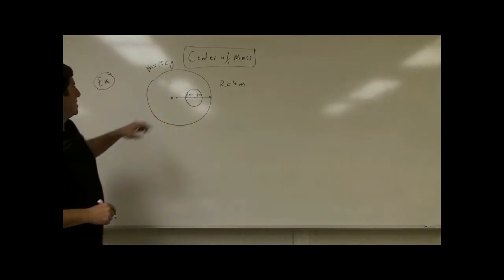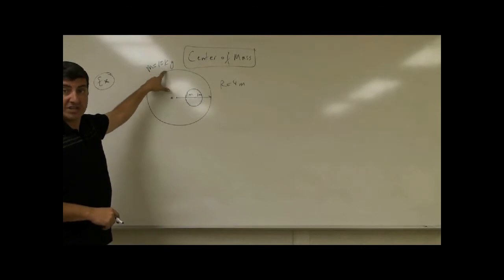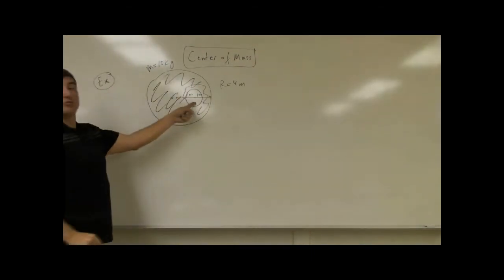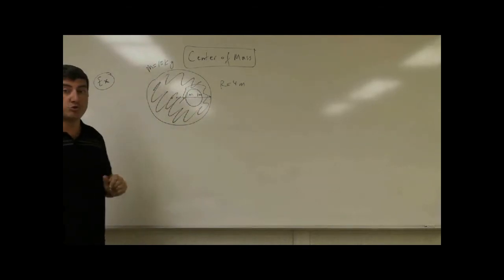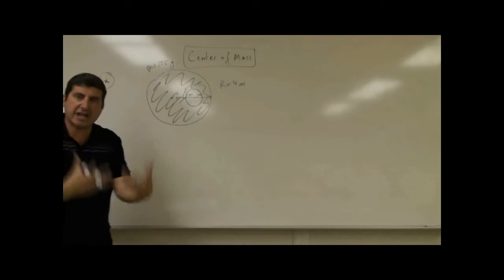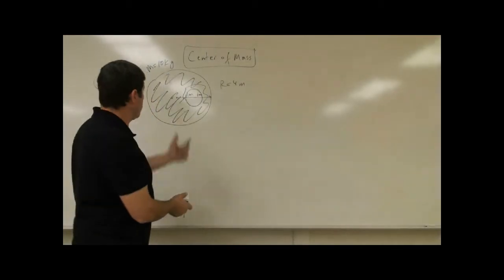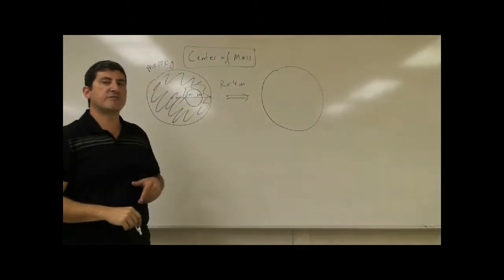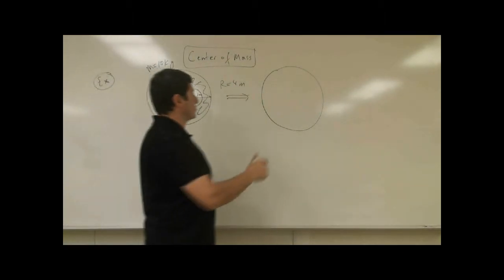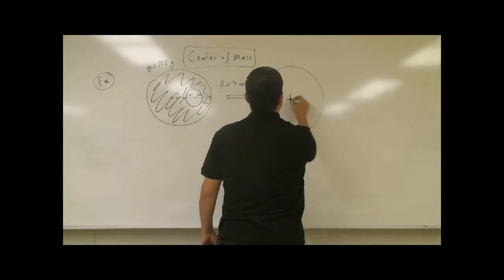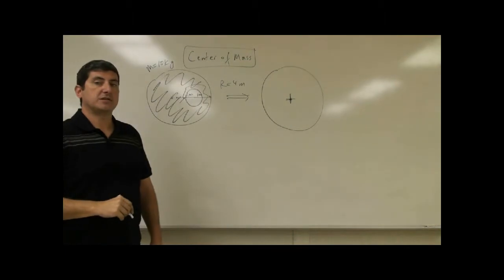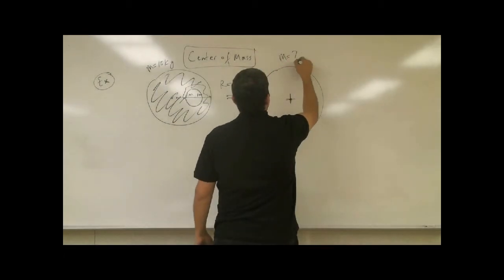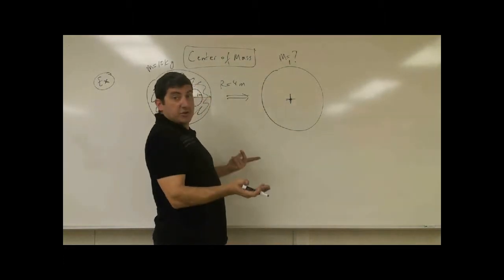Here's what we do. By the way, when we say the object has a 10 kilogram mass, that means it's the mass of the actual material without the hole — the 10 kilograms does not include the hole. So what we're going to do is treat this as a whole solid disc. We'll call the mass of that solid disc M1, and its center of mass X1 will be at the center.